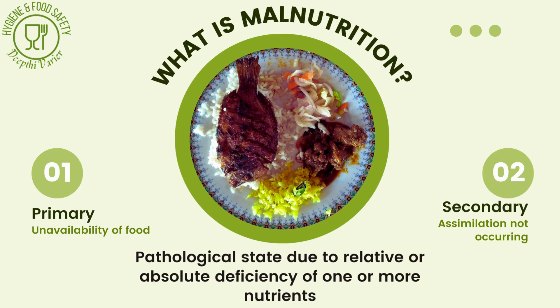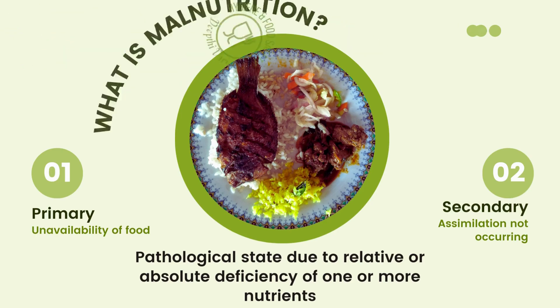Secondary malnutrition is when food is available but the body is unable to assimilate it. This can occur due to malabsorption, the secondary effect of a particular infection, or a metabolic disorder. That is what we call secondary malnutrition.